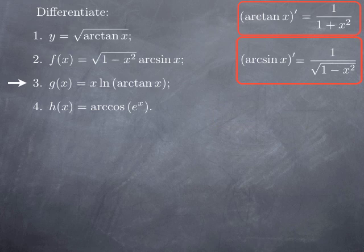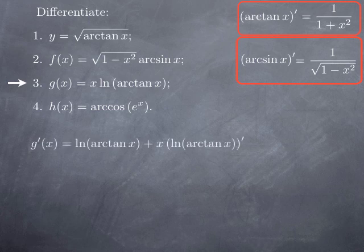For the third function, we want to differentiate x·ln(arcsin x). Again, this is a product, so we start with the product rule. The derivative of the first factor x is 1, so we have 1 times ln(arcsin x) plus x times the derivative of the natural log of arcsin x.